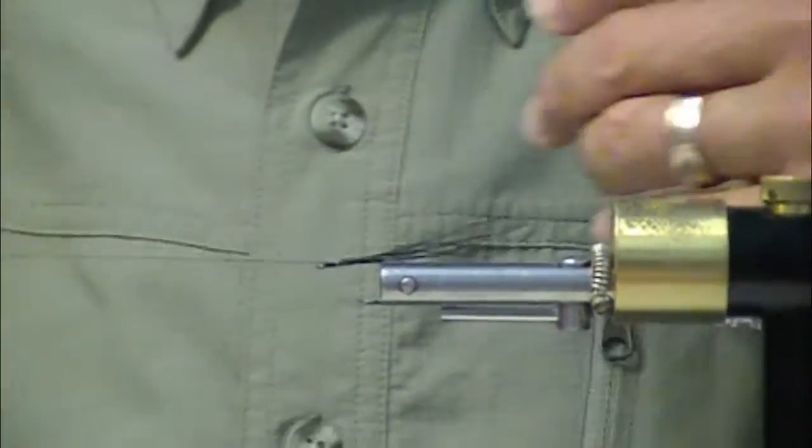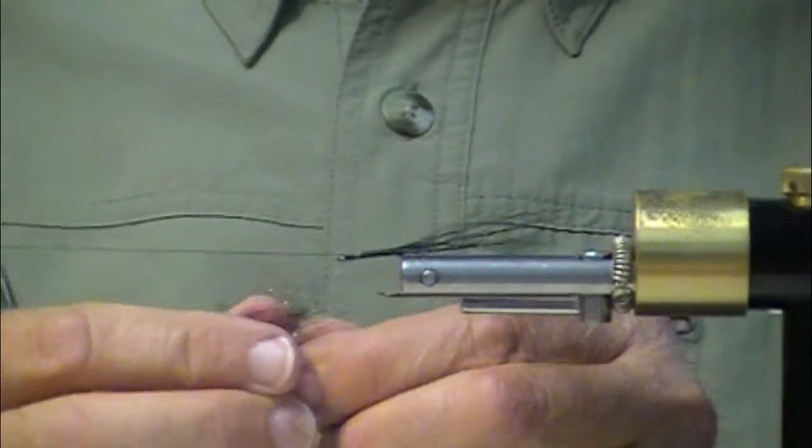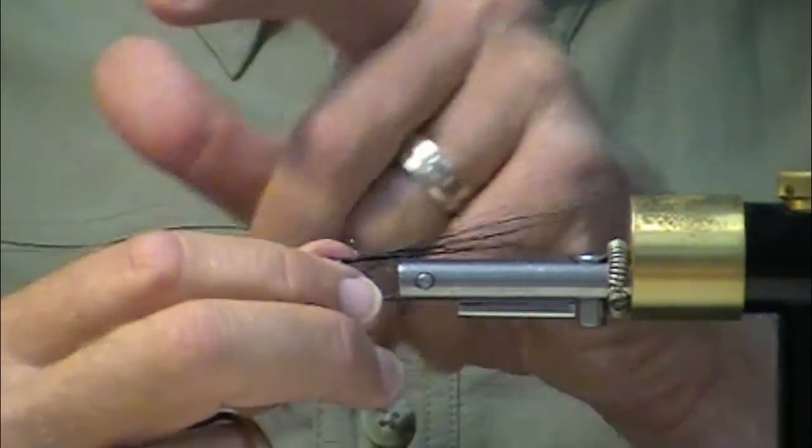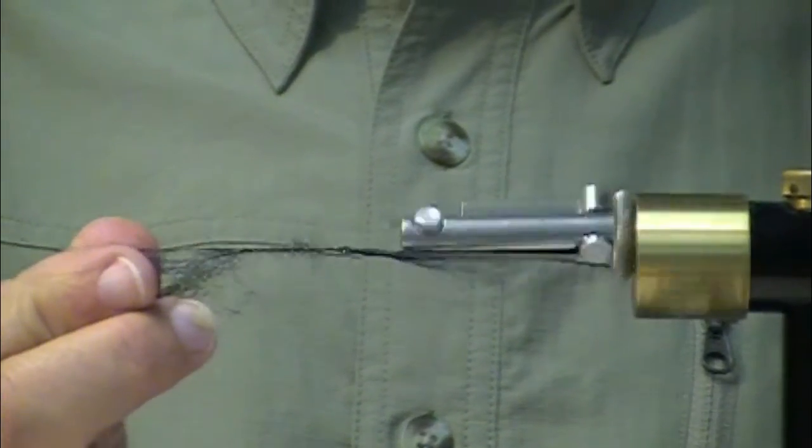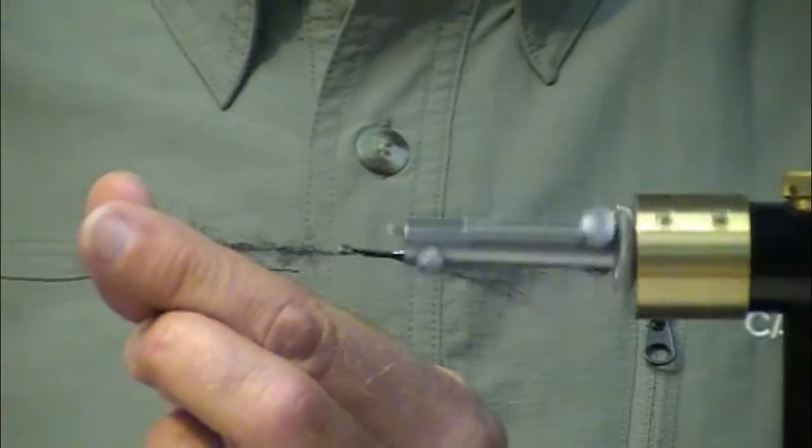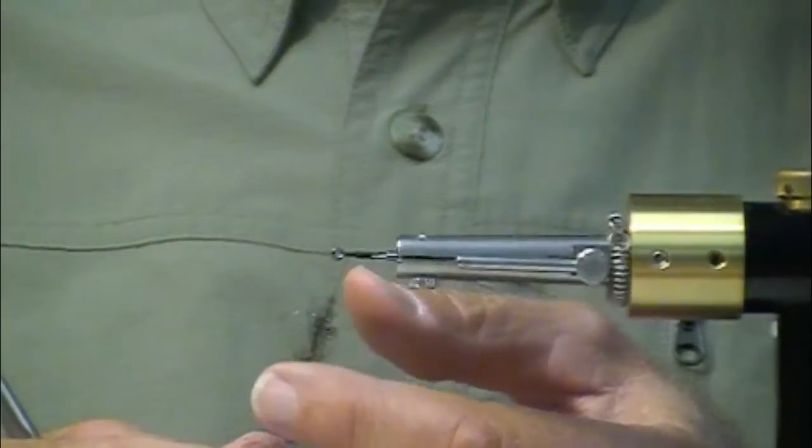So I'm going to use a black ice stud, that black bucktail. This is a size 2 Gamagatsu glow bug hook. Very nice hook. Ring eye. Slightly offset.